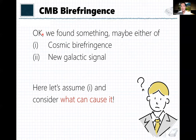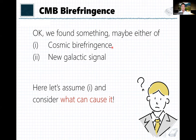Anyway, we can say we found something new — maybe either cosmic birefringence or a new galactic signal. As a cosmologist, let me assume the first possibility: we actually observe cosmic birefringence. At least this observational discussion gives us good motivation to theoretically think about what could cause this kind of cosmic birefringence signal.